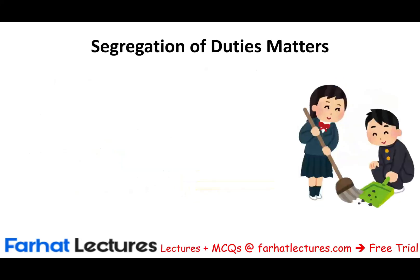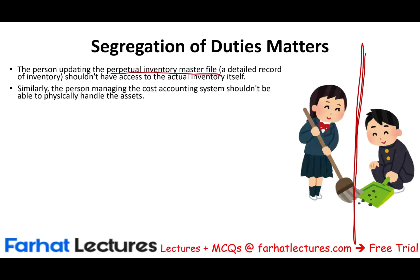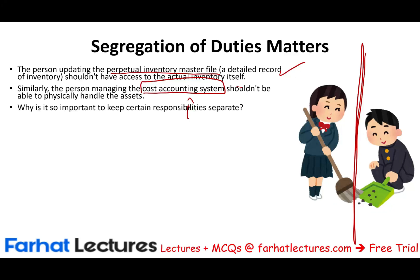The first control, just like in any cycle, is segregation of duties. The person updating the perpetual inventory master file — the detailed record of inventory — should not have access to the actual inventory. People managing the cost accounting system should not be able to physically handle the asset. Think of it as a separate accounting system within the company, sometimes even a separate software system tracking production separately from the accounting information system. The person in charge of the cost accounting system should not have access to the asset or be able to change the general ledger system.